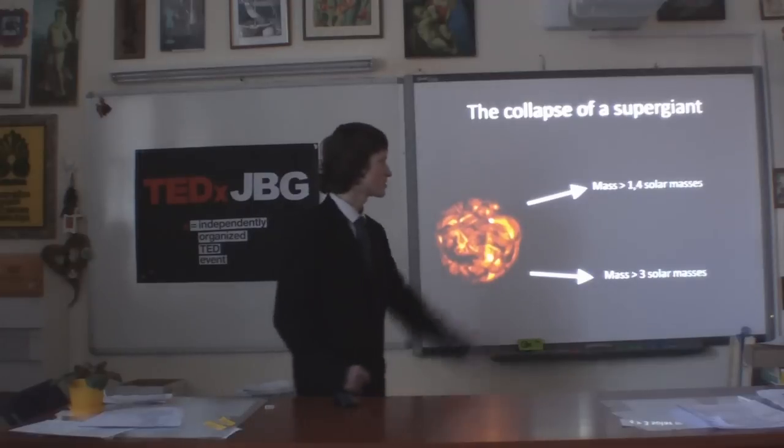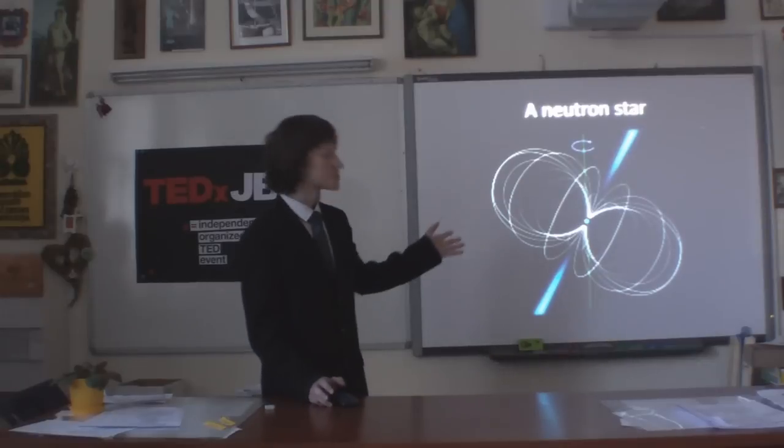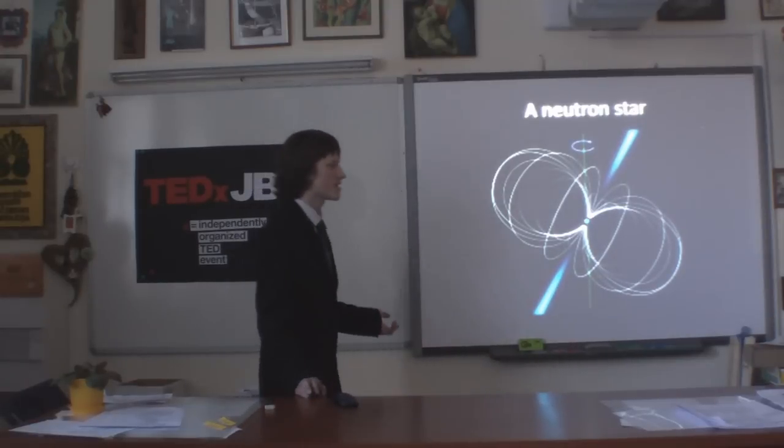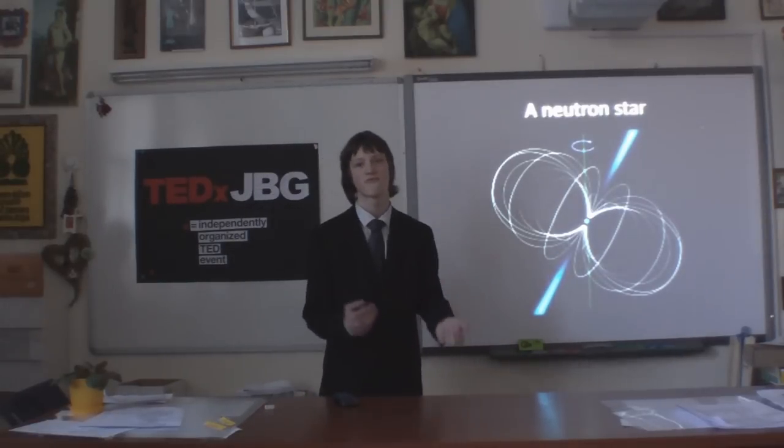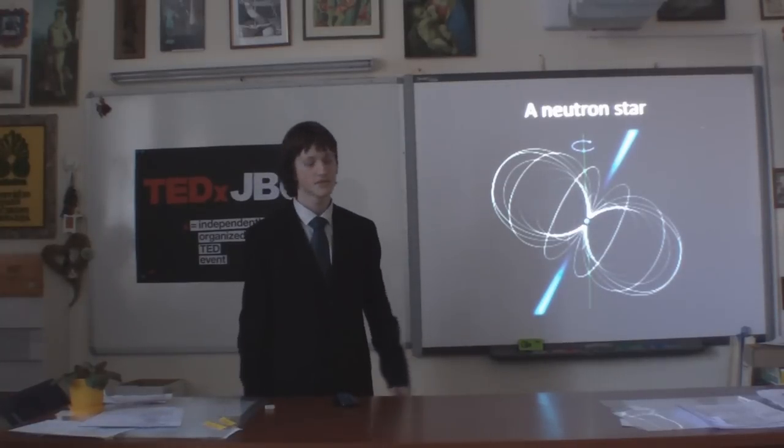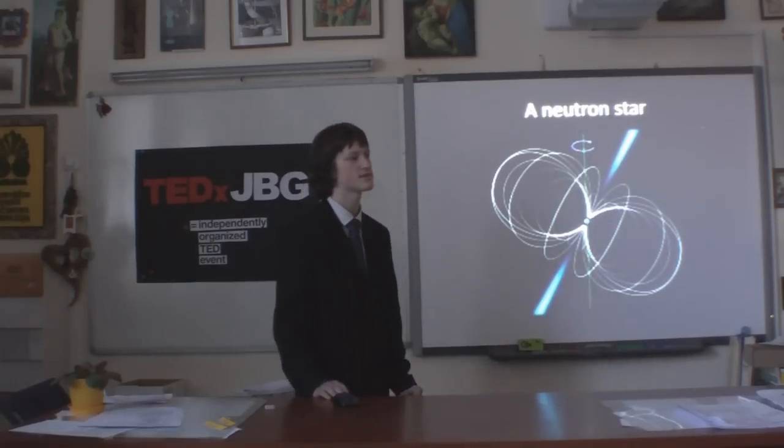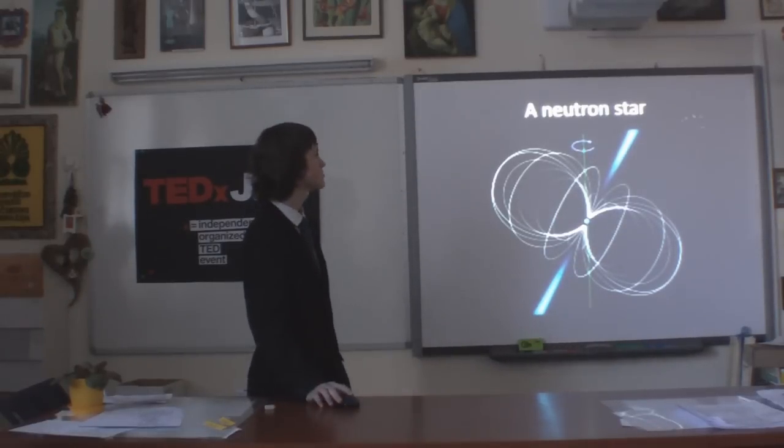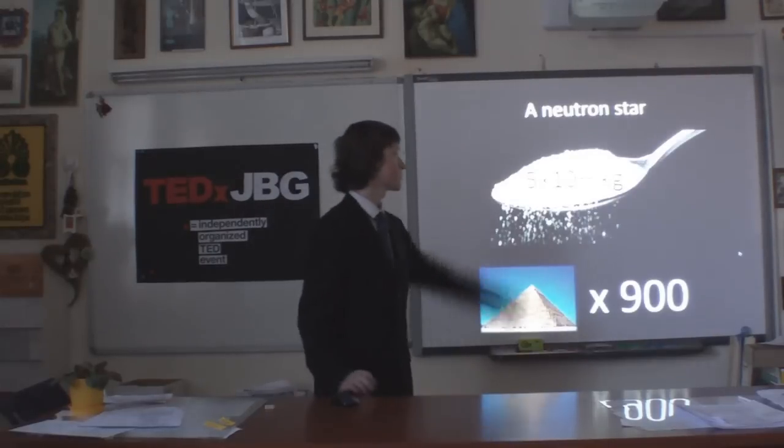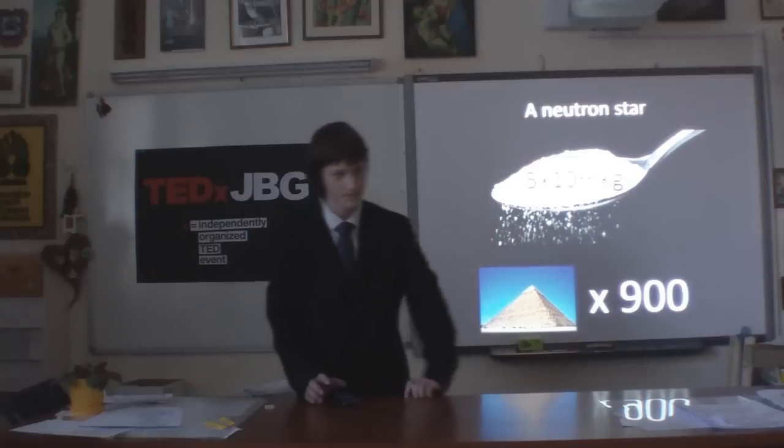Supernovas may become a neutron star or a black hole, again depending on the mass. A neutron star is a very extreme star. It spins around its axis very fast, a thousand times a minute. It has very high gravity. It has very high magnetic fields, much more than those of Earth. And a neutron star is so dense that one teaspoon of such star weighs as much as 900 Egyptian pyramids.